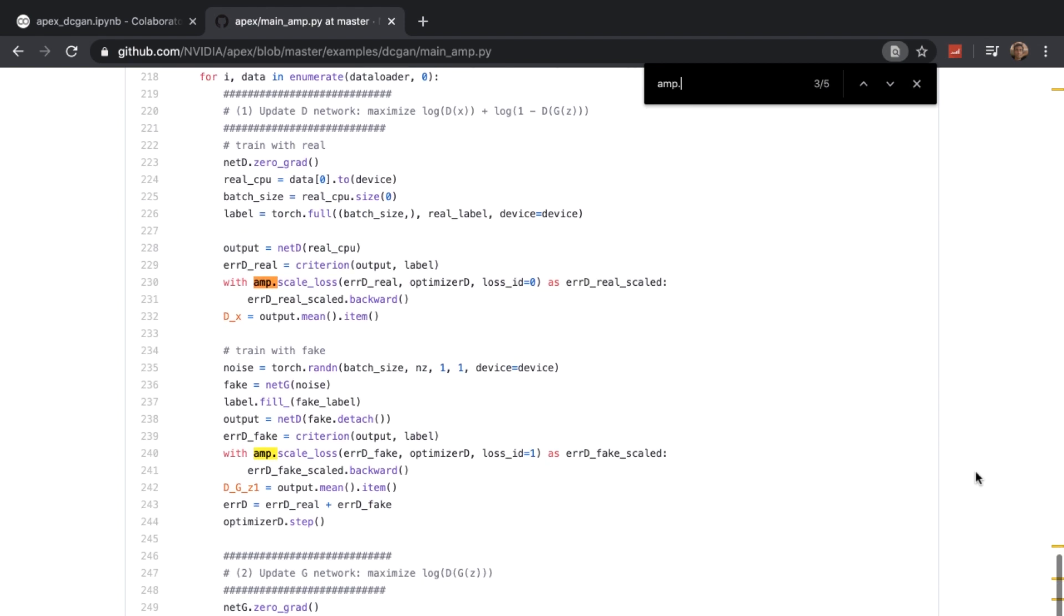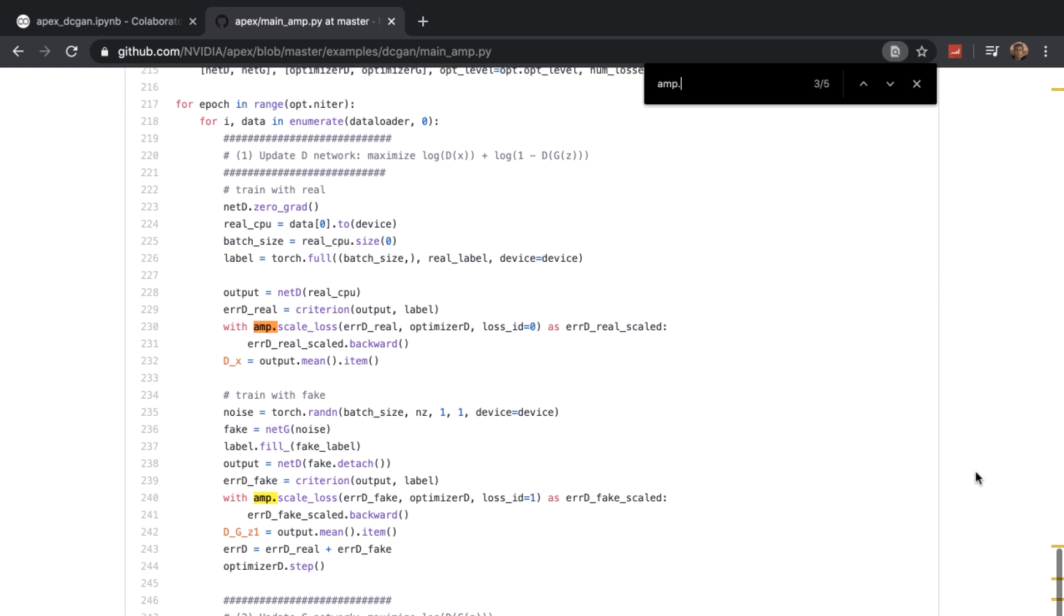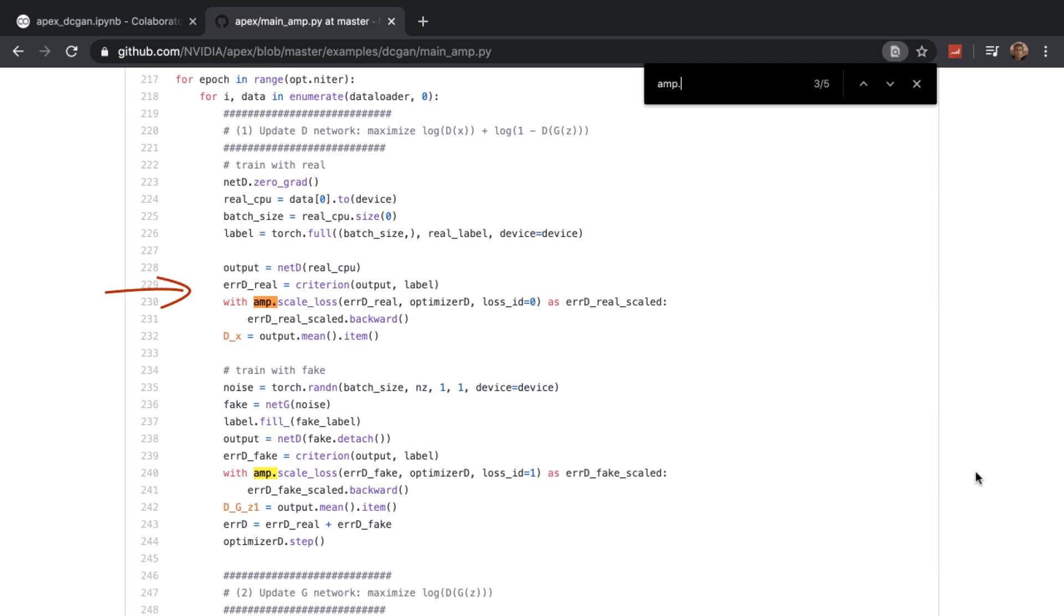When training this DCGAN, we start by training it with real images first. We execute the forward propagation step, and then get the loss, error_D_real. Once complete, we scale this loss, and then execute the back propagation step.